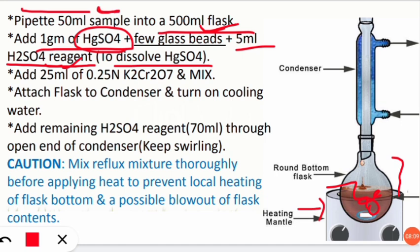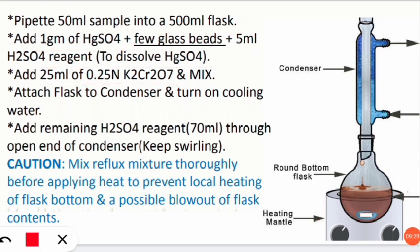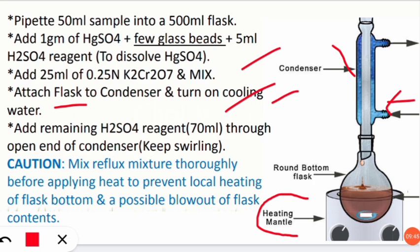The H₂SO₄ reagent is used to dissolve the HgSO₄ (mercuric sulfate powder) inside the water sample. Then add 25 ml of 0.25 normality K₂Cr₂O₇ (potassium dichromate). After that, mix the solution — the sample along with all the reagents — and attach the flask to the condenser and turn on the cooling water.